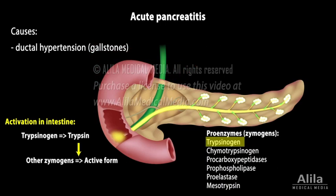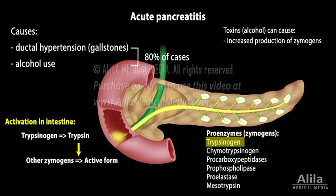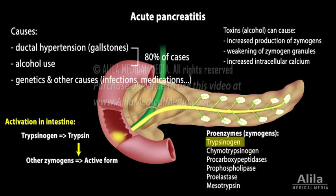Many toxins, in particular products of alcohol metabolism, can cause changes that stimulate early activation of proenzymes, or zymogens. These changes include increased production of zymogens, weakening of zymogen granules, and increased intracellular calcium concentration. Some people may also be genetically predisposed to pancreatitis, with mutations in genes involved in activation of trypsin, or mutations that make them more prone to ductal obstruction.